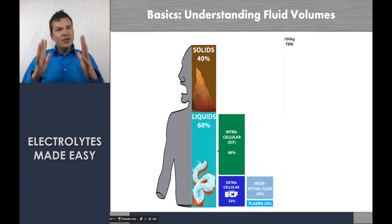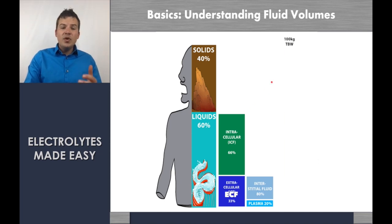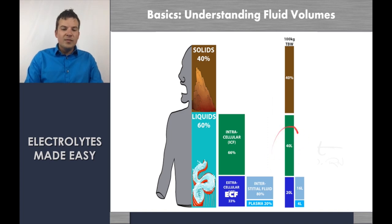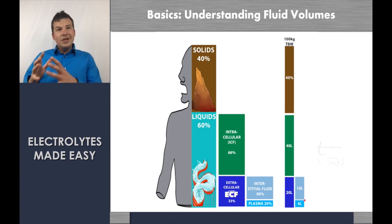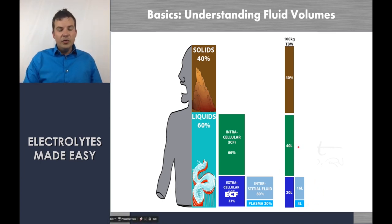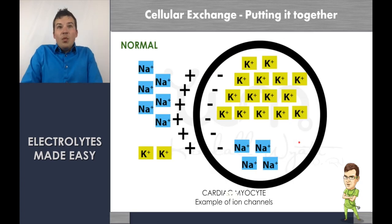The ECF can be broken down into interstitial fluid, which is 80% of the ECF volume, and plasma, which is the other 20%. Using a simple math example with a 100 kg person: 60% is water — 40 liters total — breaking down to 20 liters intracellular, 16 liters interstitial, and 4 liters of plasma. So a 100 kg person has about 4 liters of plasma.